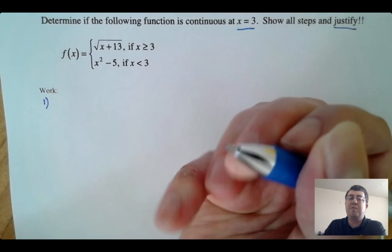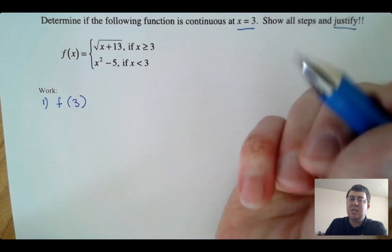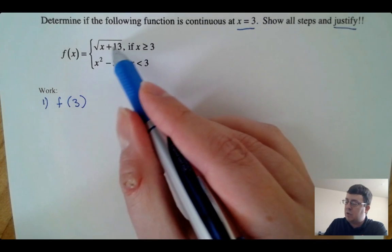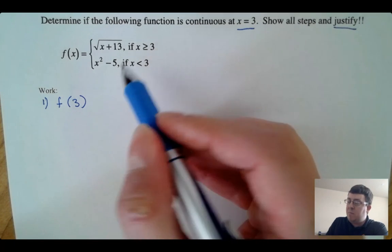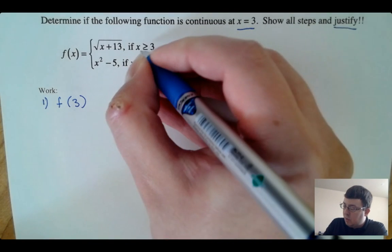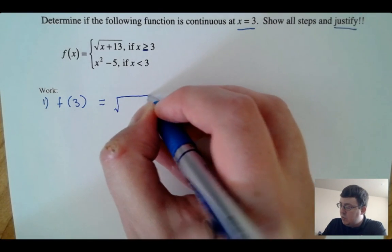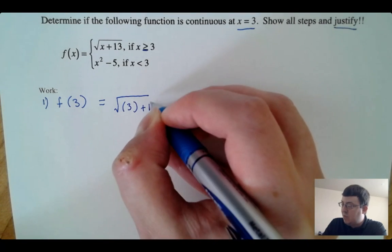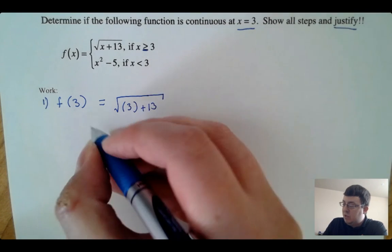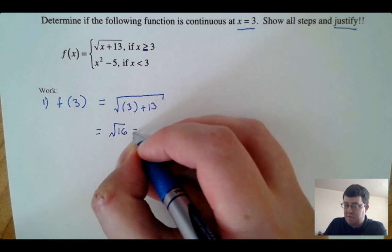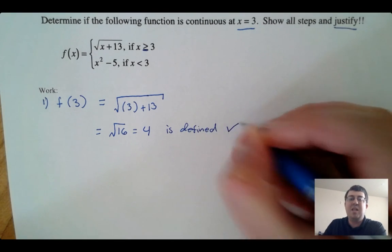The first thing we need to do is prove that the function is defined at that point — f of a exists. So we want to figure out what is f of three. Looking at this piecewise function, it's defined as the radical function when x is greater than or equal to three, and a quadratic function when x is less than three. Plugging three into the first piece gives us the square root of 16, which is four. So the function is defined — we meet condition number one.